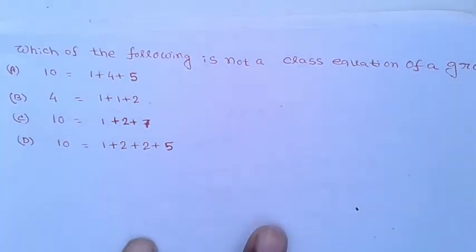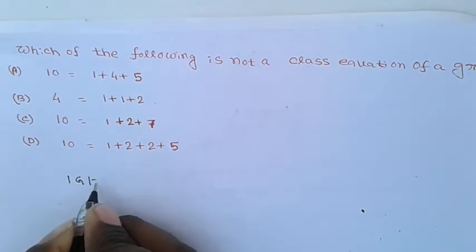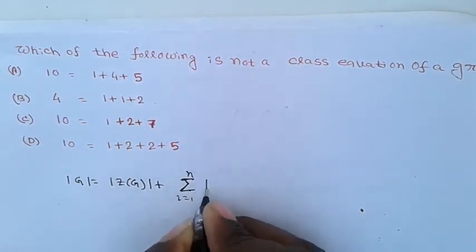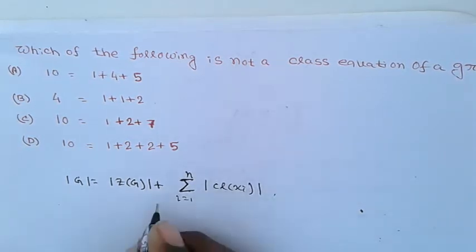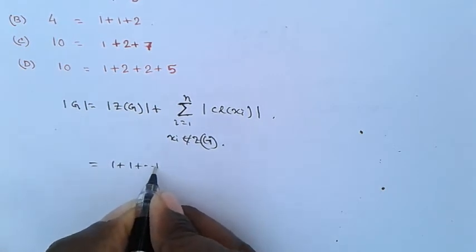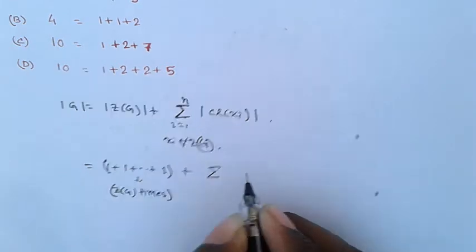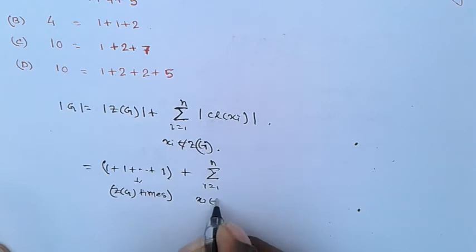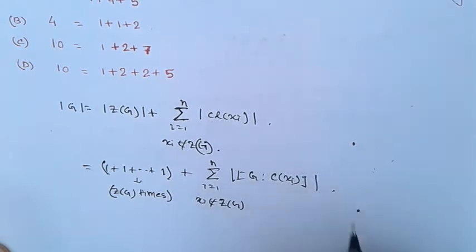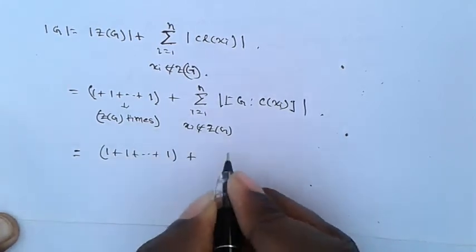The question asks which of the following is not a class equation of a group. The class equation states that the order of G equals the order of Z(G) plus the summation of the order of the conjugacy class of x_i, where x_i does not belong to Z(G). This can be written as 1 plus 1 plus... (|Z(G)| times) plus the sum of [G : C(x_i)] for x_i not in Z(G).